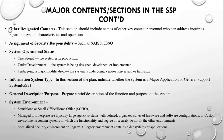Another major section is other designated contacts — this section should include the names of other key contact personnel who can address inquiries regarding system characteristics and operations, as well as the assignment of security responsibilities such as the ISSO and SAISO responsible for that system. Another section is the system operational status — this section details whether the system is in operation, undergoing development, or undergoing major modification, and must be documented in the SSP.